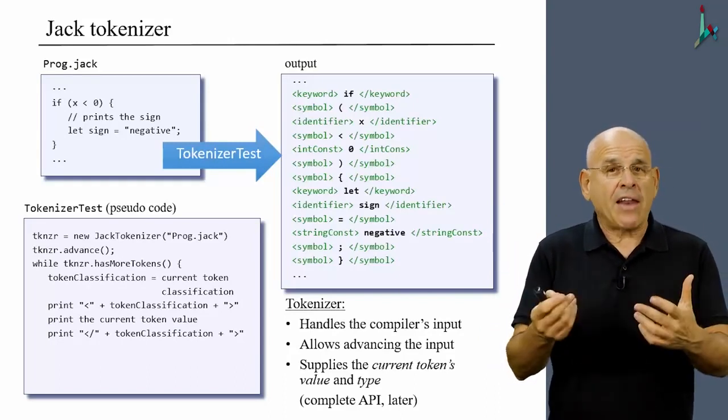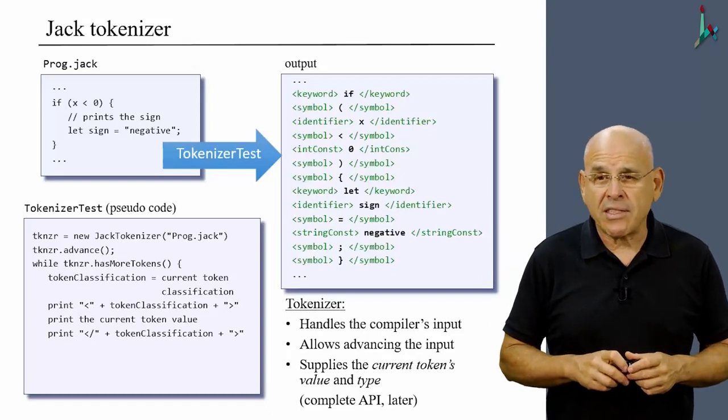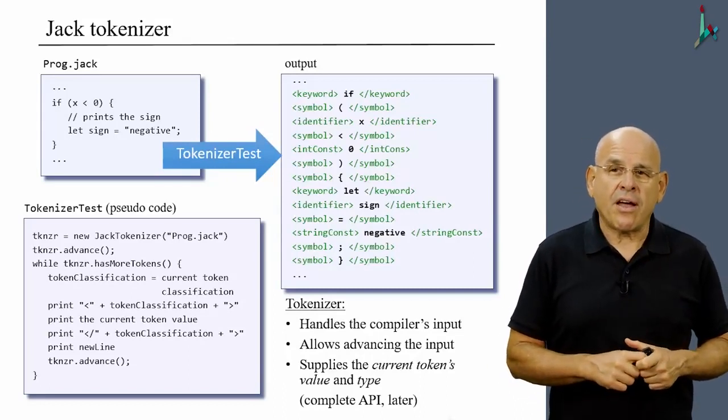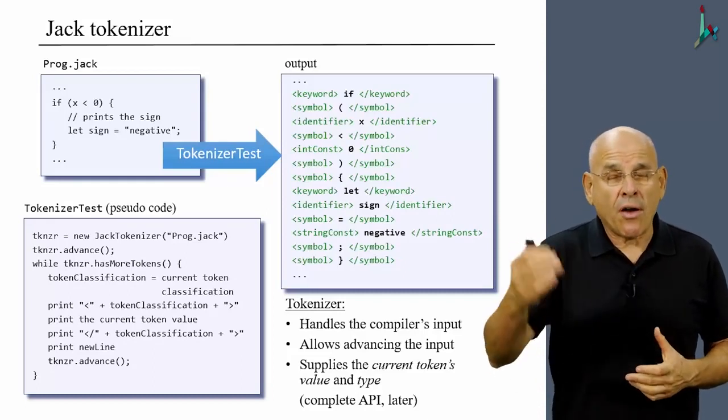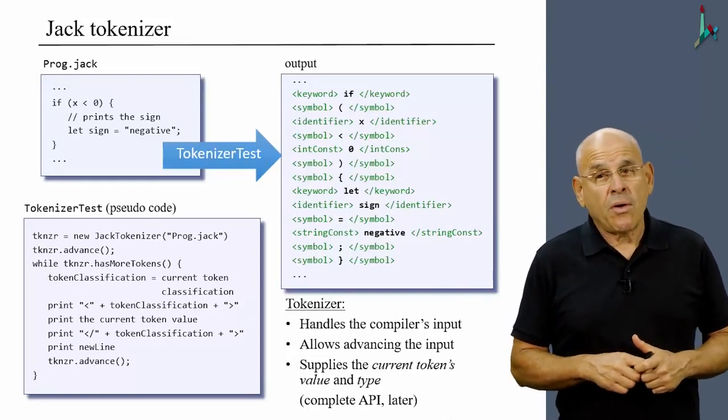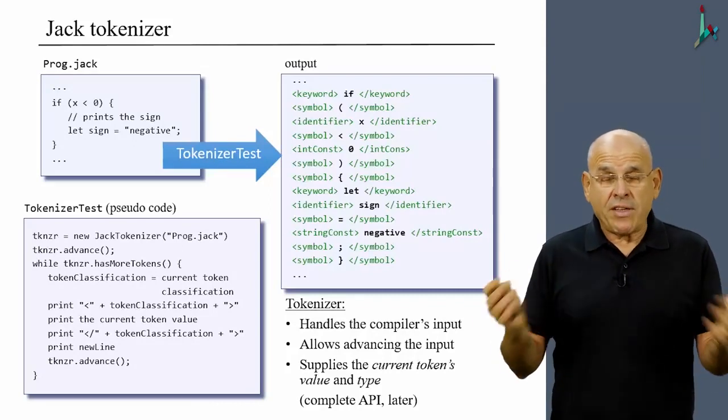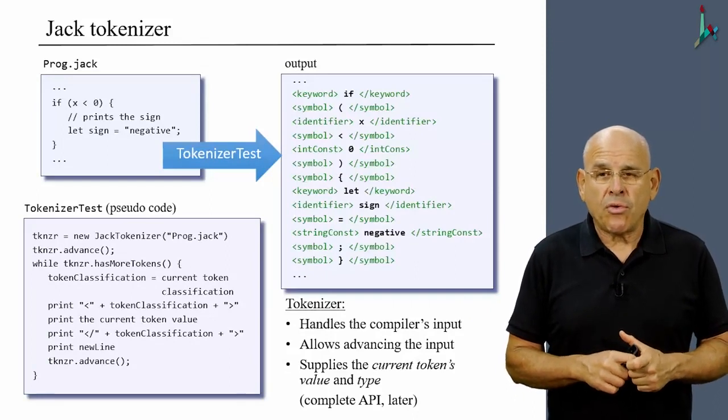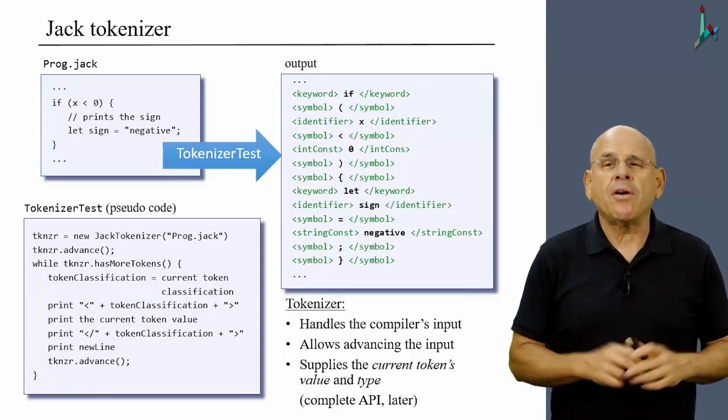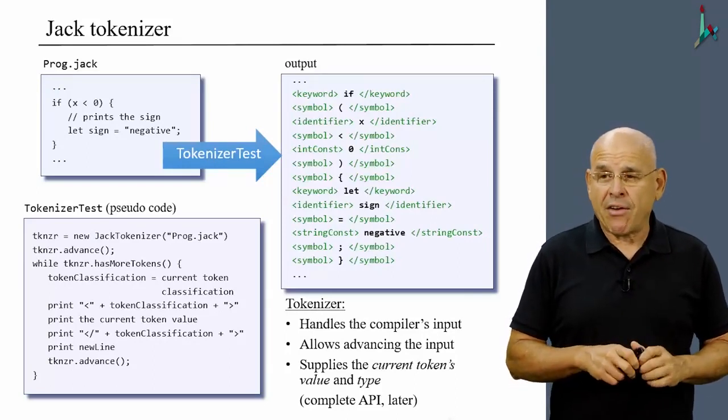And once I do this, I can actually print this line to the output. I print the opening tag. Then I print the value of the current token, the token itself. Then I print the end tag with the token classification. Then I print a new line. And once I do this, I advance to get the next token from the tokenizer, go back to the loop, and this will go on until we consume all the tokens from the input file. So this is an example of writing a program that uses the services of the Jack tokenizer. Now obviously, we are going to supply to you a very specific and complete API of this tokenizer. So if you're not completely sure how to invoke all these methods and services, don't worry about it. We'll have much more to say about it later on in this module.